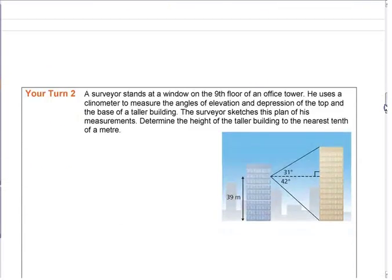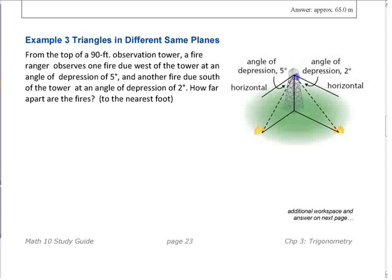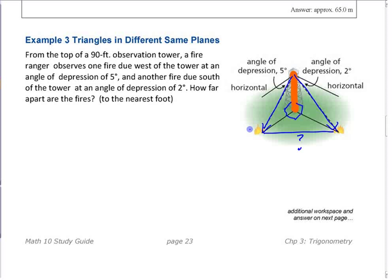There's one more problem that's three-dimensional — a tower with two directions at a right angle on the ground, and the question asks how far apart two fires are. You'll need to work through a couple of triangles and use answers you find to get the final result — same approach. The goal today is to get through a good chunk of this section and some of the assignment if you're ahead.